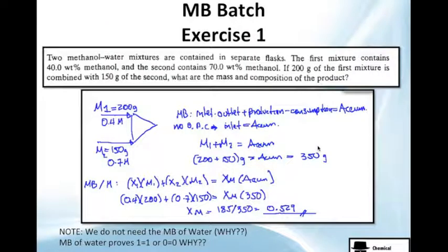We're going to work on this exercise. It's kind of easy, simple. Two methanol-water mixtures are contained in separate flasks. The first mixture contains 40% of methanol, it's here, and the second one contains 70% of methanol. If 200 grams of the first mixture is combined with 150 grams of the second one, so I have 200 in the first one, 150 in the second one, they ask you kindly what is the mass and the composition of the product. Product is the final.